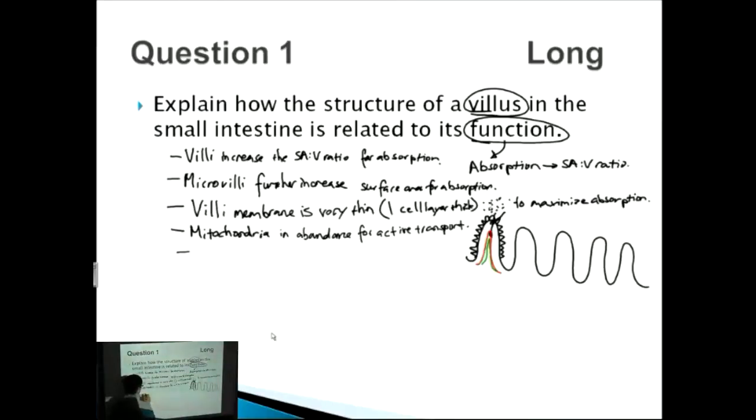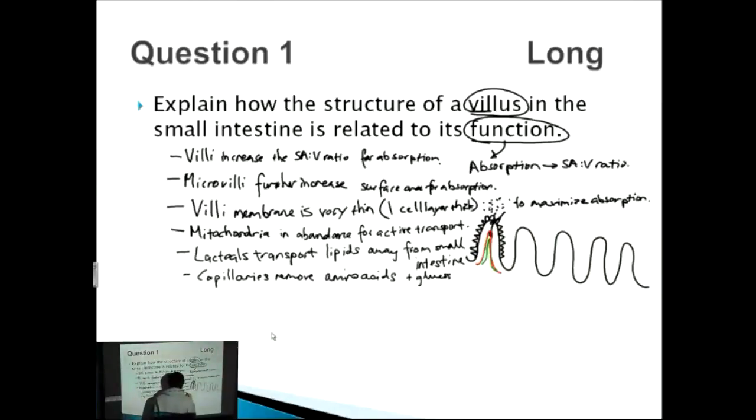So lacteals transport lipids away from small intestine, and what do the capillaries do? Well they do something similar, but they remove proteins or amino acids as well as glucose. And when you're talking about moving things away, you always want to remember they're moving from one place to another. The capillaries will move amino acids plus glucose from small intestine away.